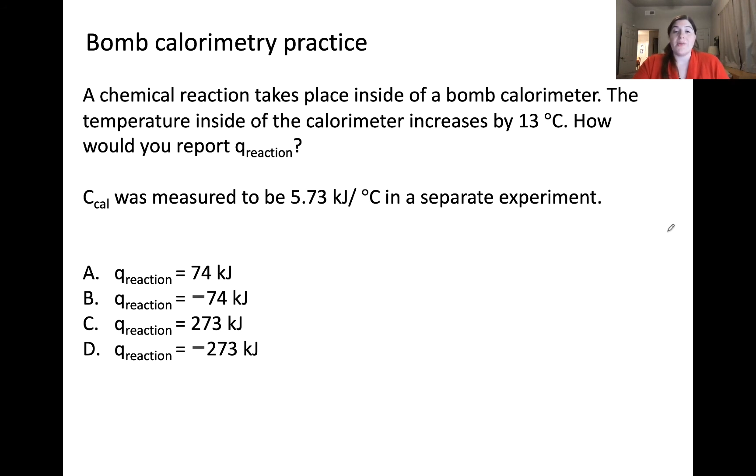In this question, we're asked to report Q of reaction. We know that we can calculate or determine Q of the calorimeter. And we're given the specific heat capacity of the calorimeter to be 5.73 kilojoules per degree Celsius. And we know that delta T here, because the temperature inside the calorimeter increases by 13 degrees Celsius, we know that delta T is positive 13 degrees Celsius from the perspective of the calorimeter.